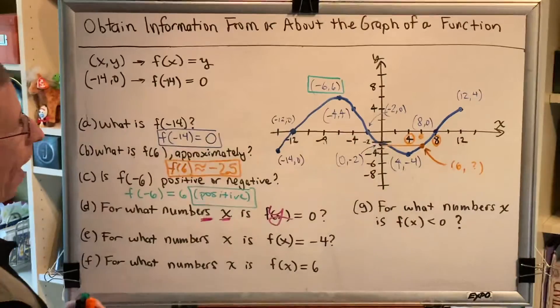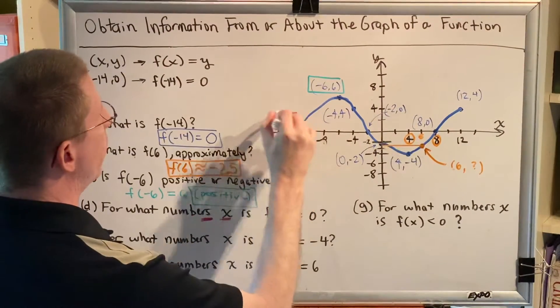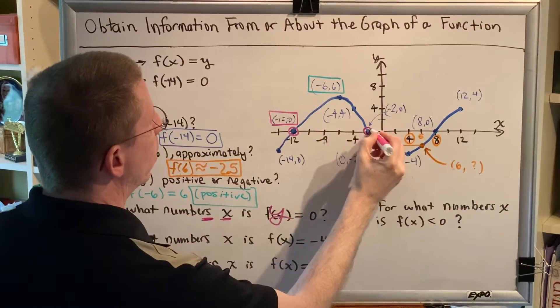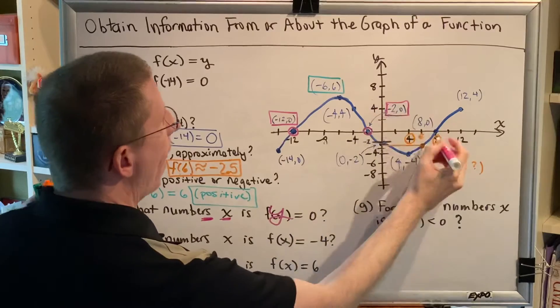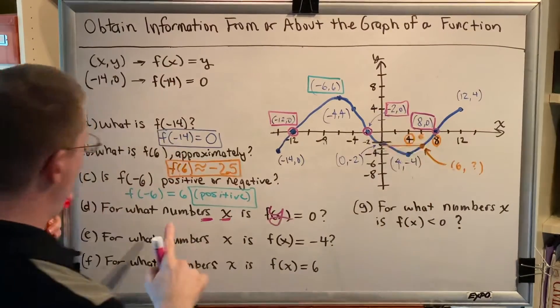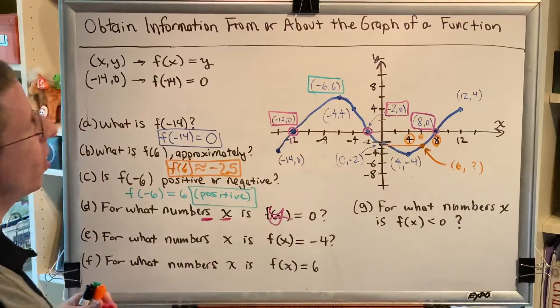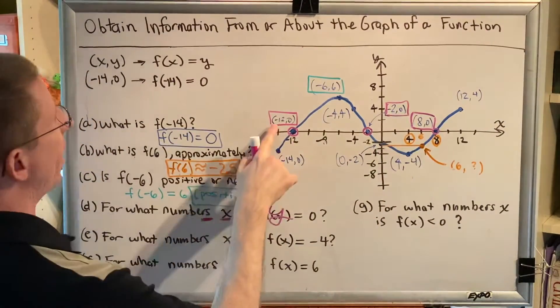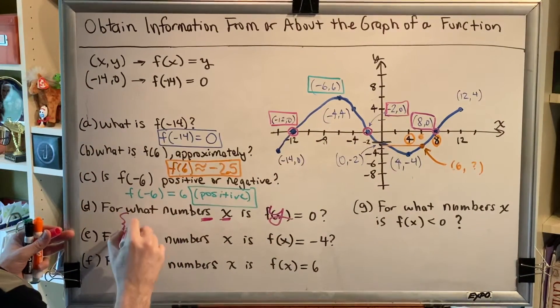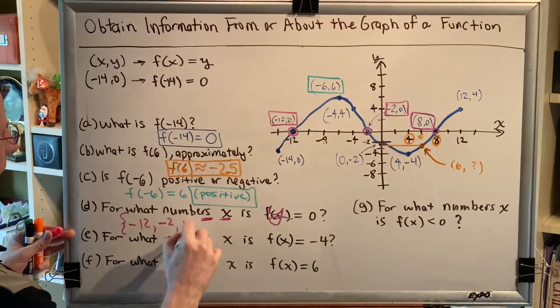What are the parts of our graph that have a y of zero? Well, that would be this one, that would be this one, and that would be this one. And remember that the question is asking for what numbers x. We know that the y's are all zero. What they want to know is what are the x's? Well, the x's are negative 12, negative 2, and 8. And we're going to write that in set notation: {-12, -2, 8}.